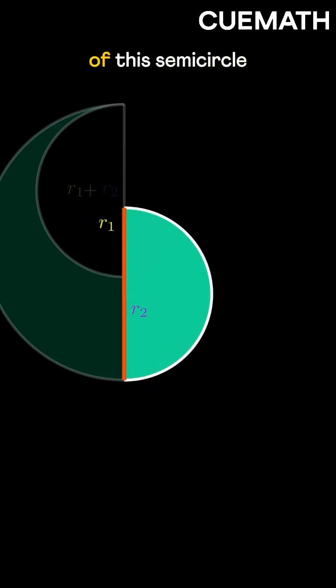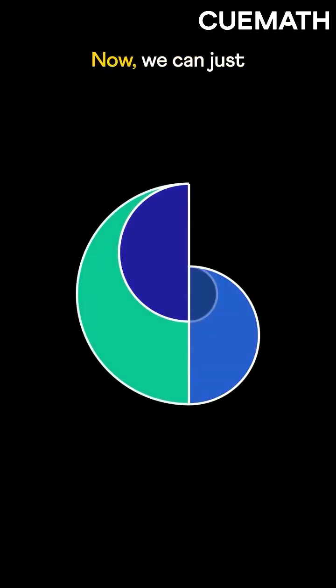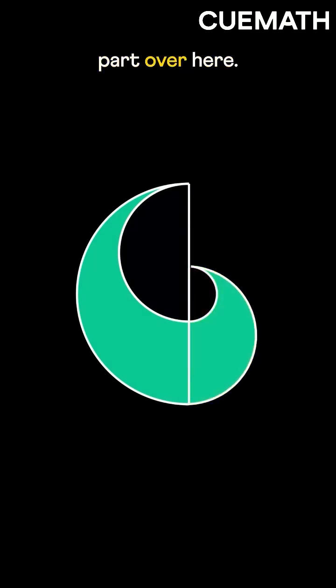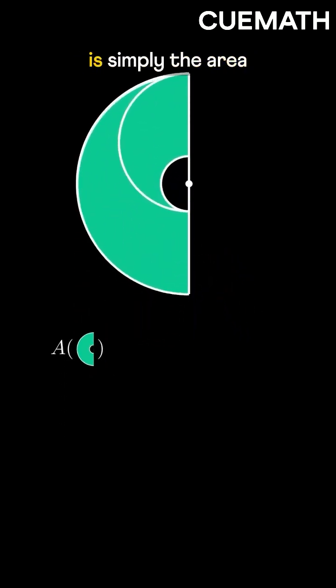Similarly, the diameter of this semicircle is R1 plus R2, so their areas must be equal. Now we can just place this entire part over here. So the shaded area is simply the area of the largest semicircle minus the smallest one.